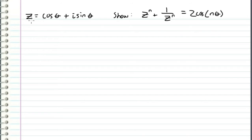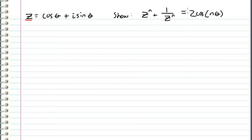In this problem, we have a complex number z, and it's equal to cosine theta plus i times sine theta. We want to show that z raised to the nth power plus one over z raised to the nth power is equal to two times cosine of n theta.